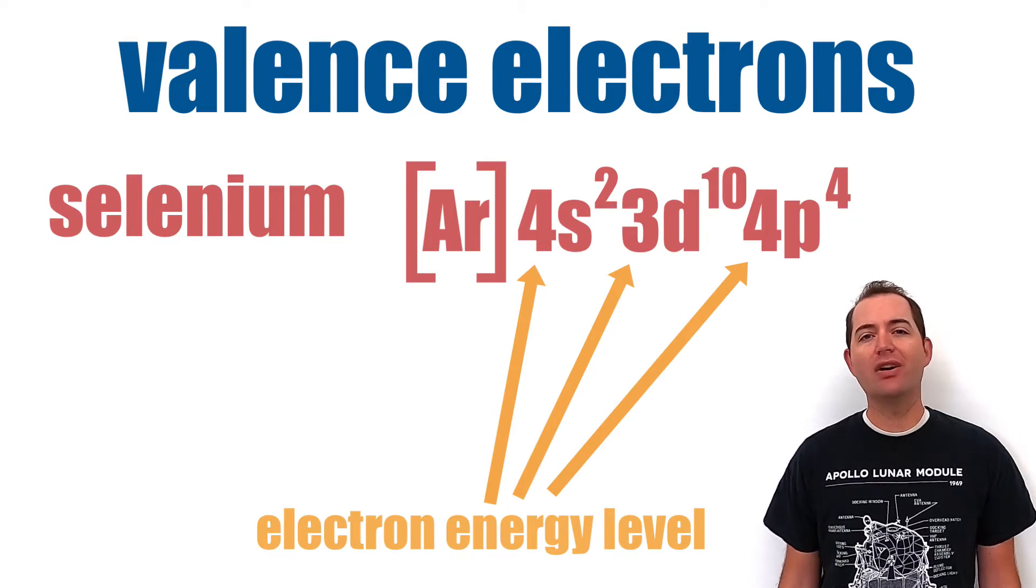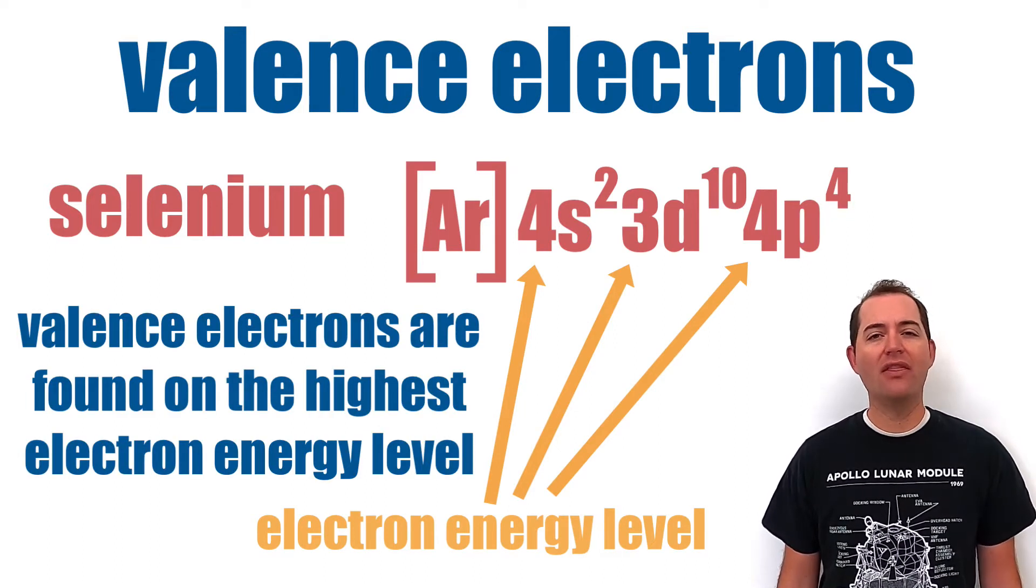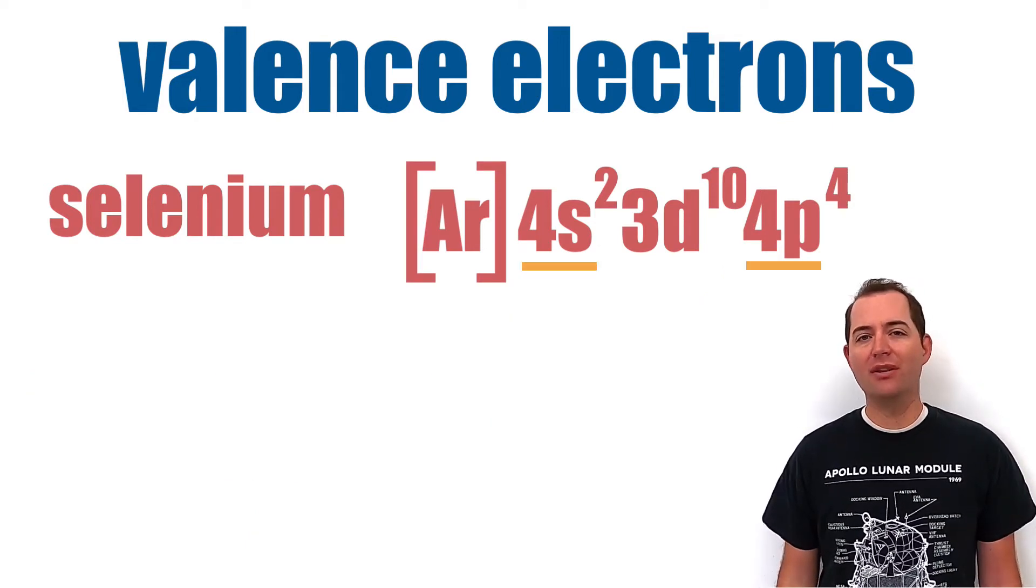The larger numbers represent electron energy levels, and valence electrons are found on the highest energy level of an atom. In the case of selenium, this would be the fourth energy level.